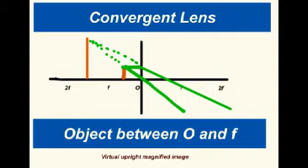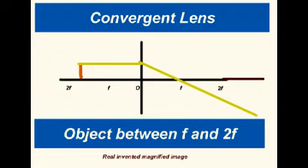Finally, if the object is between the focal length and twice the focal length, it's again different. Now the image is real, inverted but magnified.